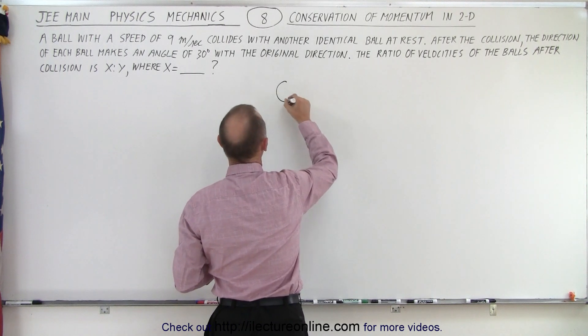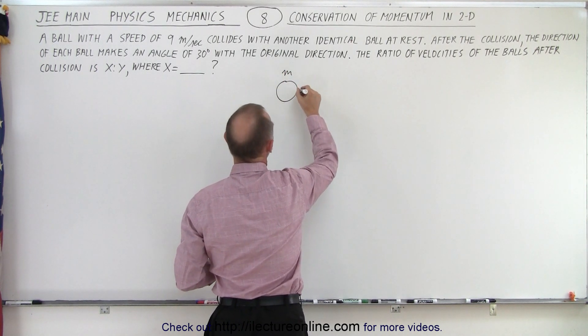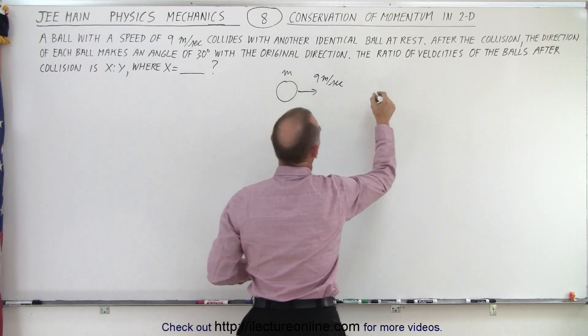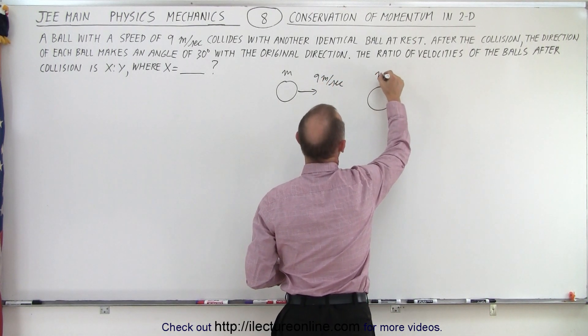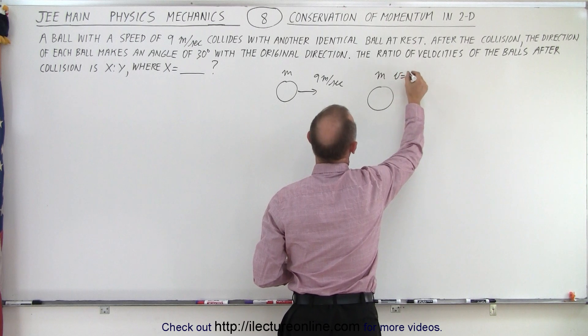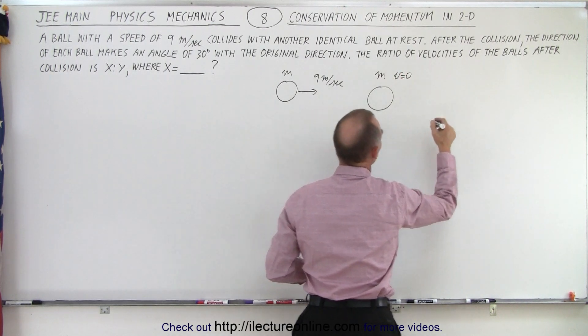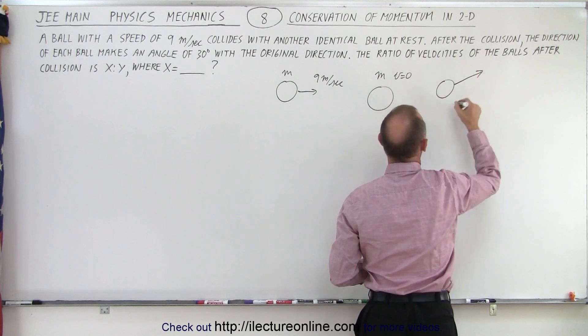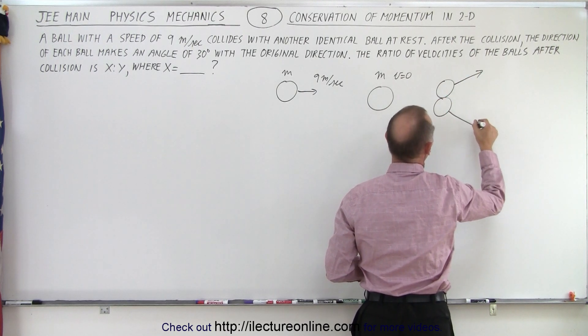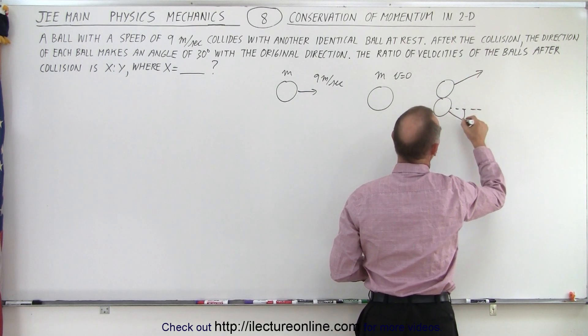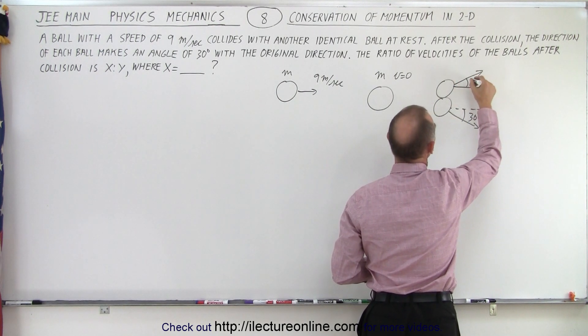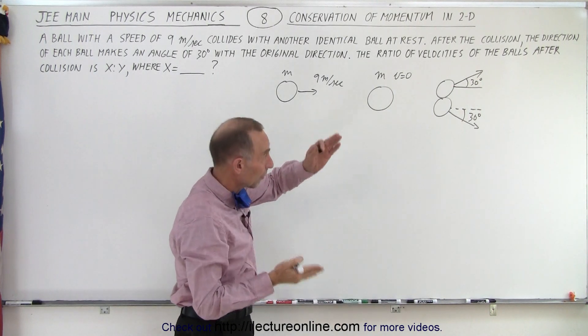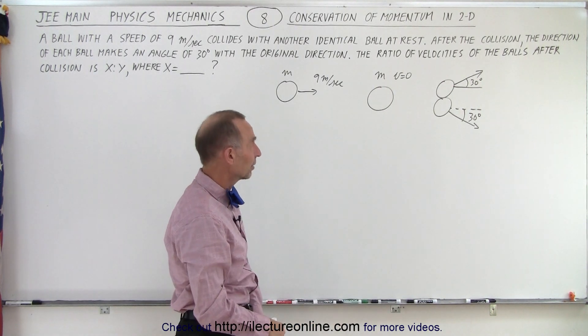So here we have a ball that has mass m which is moving at 9 meters per second. It collides with another ball of mass m where velocity is equal to zero. And then the two balls go off in their own separate directions like this. Each making an angle of 30 degrees with the original direction which is the horizontal direction. So the only way that can happen is if one goes up and one goes down at an angle of 30 degrees.